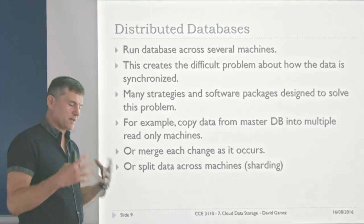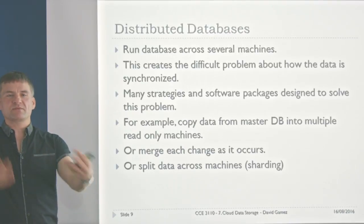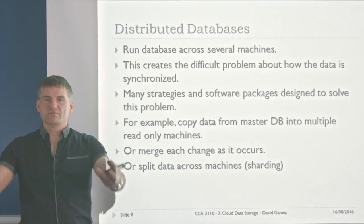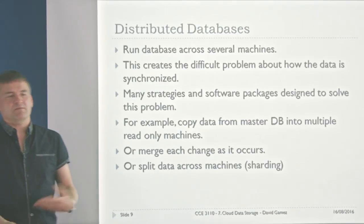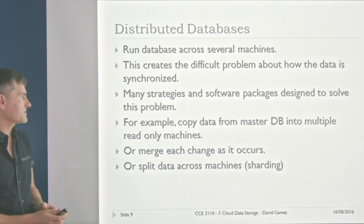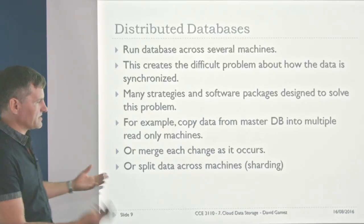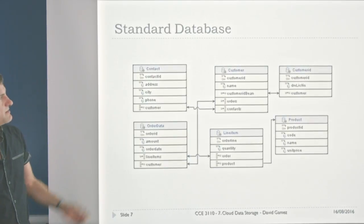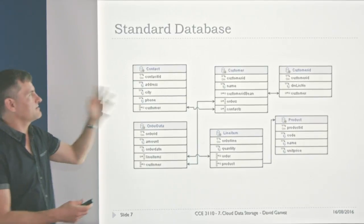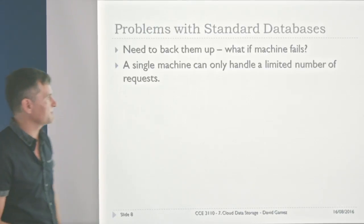If you've got the customer on one machine and the contact on another, you've got to make two separate writes. What if one machine falls over in the middle of a transaction? It gets horribly messy. One approach is to have a single master database but serve read-only copies from many machines. For more dynamic data, you need to keep everything synchronized. Another approach is sharding — splitting the data, so half the customers are on one machine and the other half on another — but it's not trivial.